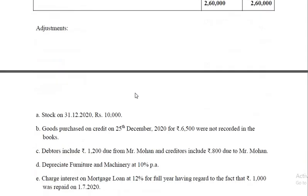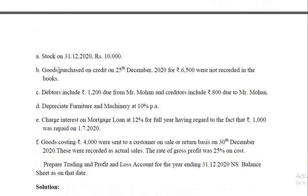Now we'll look at the adjustments first and then take the trial balance items. Stock on 31st December 2020, at the end of the year, is 10,000. This should be credited to the trading account and again shown on the asset side of the balance sheet.